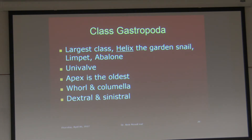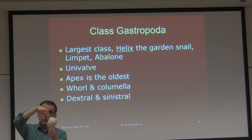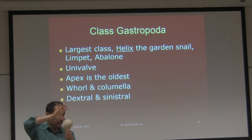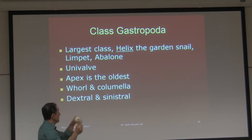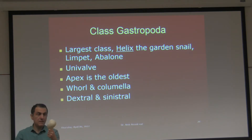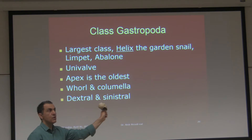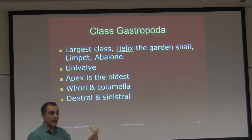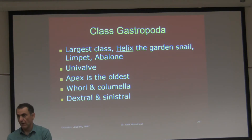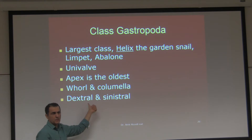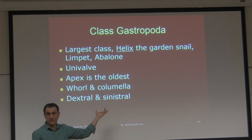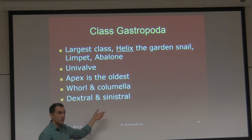Dextral and sinistral shells — some shells coil one way and some shells go the other way. Most shells in the world are dextral. To determine: look at the apex on top, look at the aperture — if the whorl goes counterclockwise, that's a dextral shell. I have a few sinistral shells I can bring out for you during the lab practical exam. I keep them stashed away so they don't get broken or lost.